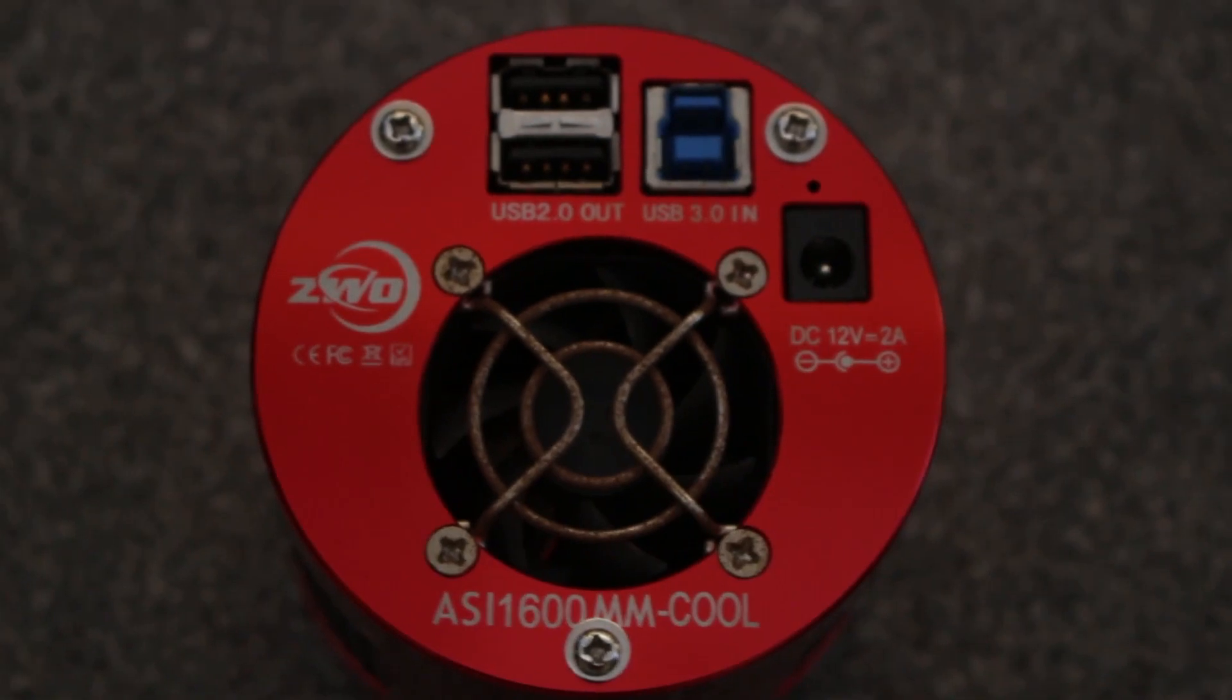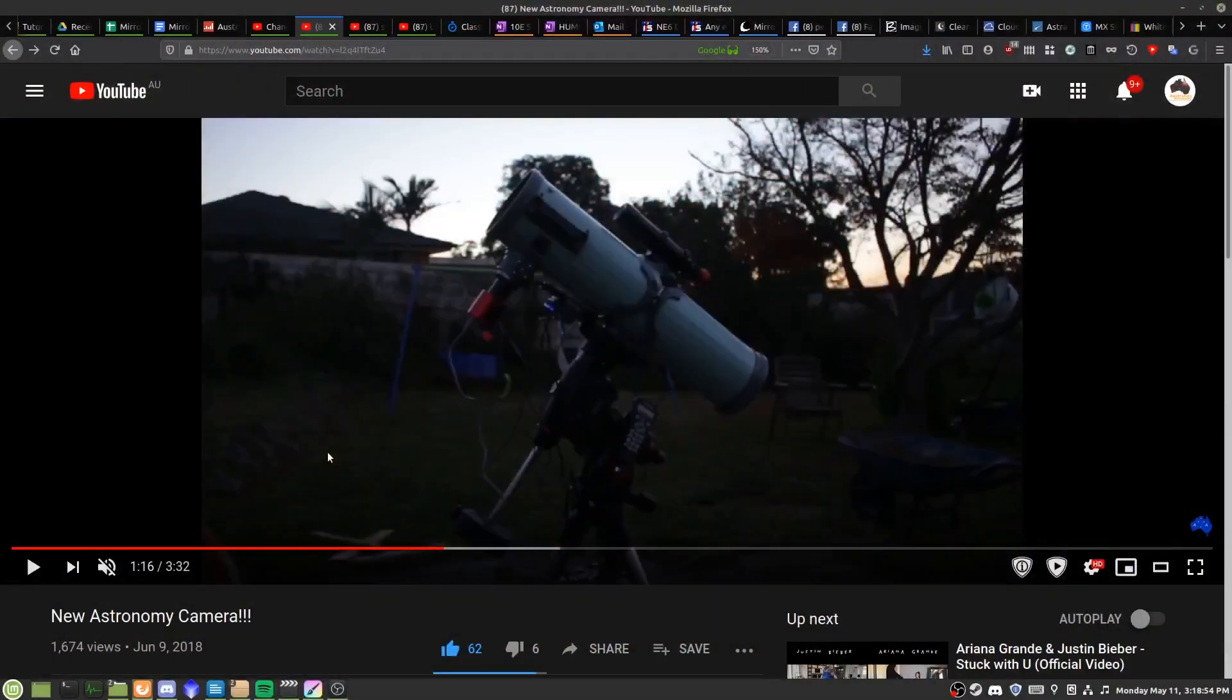And again, only at the amazing price of $1,000 USD. I come into the picture in about 2018, where I grabbed my first astro camera, which was the ASI 1600 MMC, or mono-cooled.